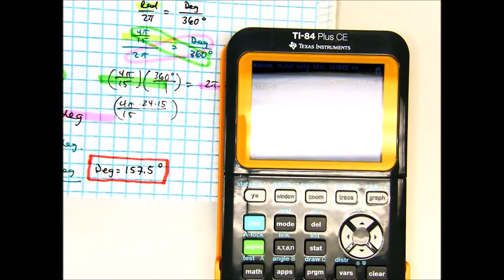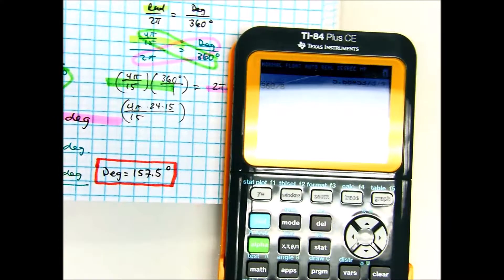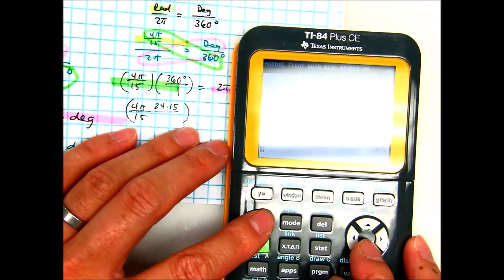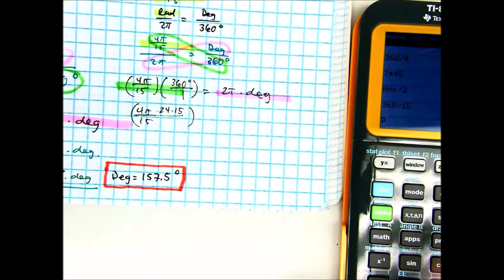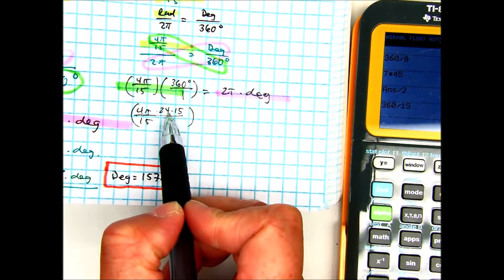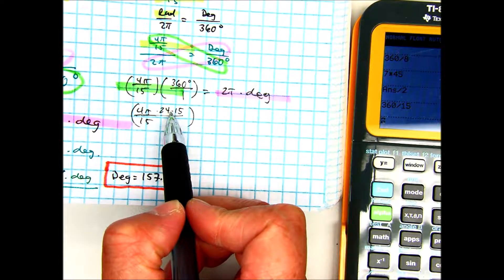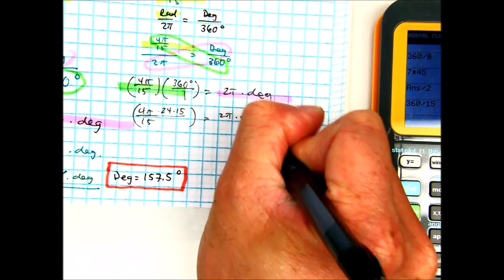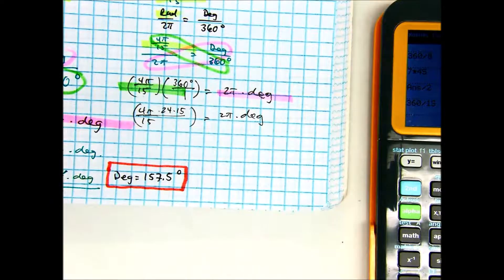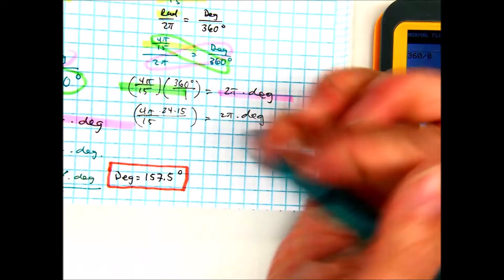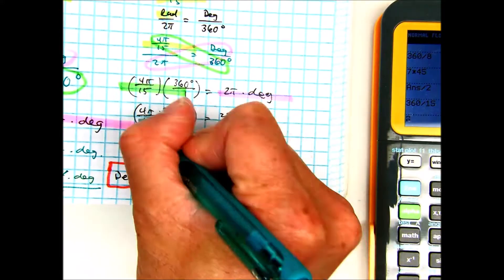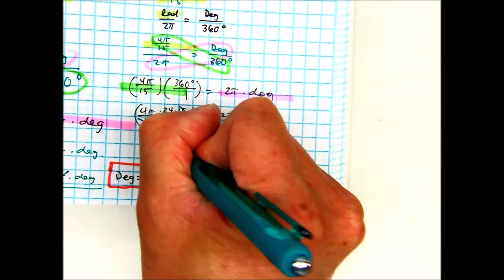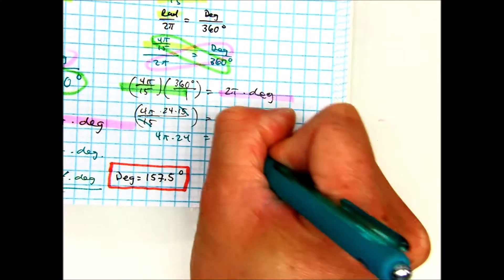Can't see the screen. Can you see it now? What I did in my calculator is I just did 15 goes into 360 24 times. And I have 2π here. So we are going to cancel out the 15's. We are left with 4π times 24 equals 2π times degrees.